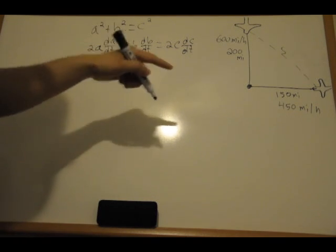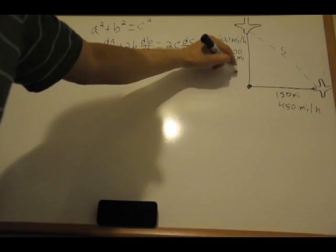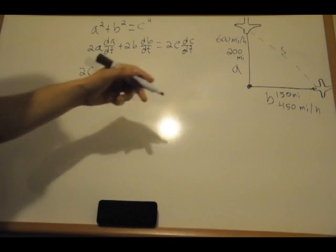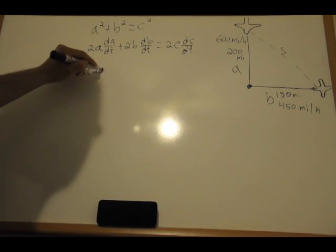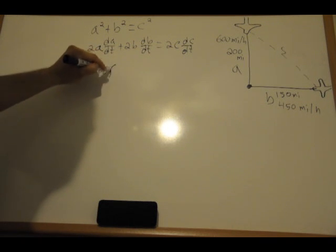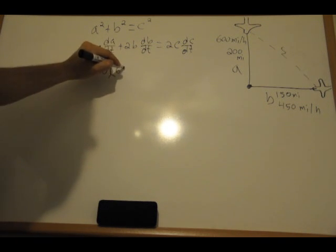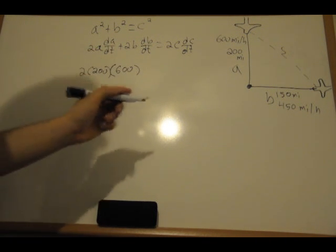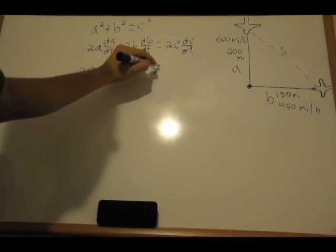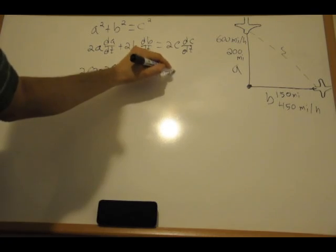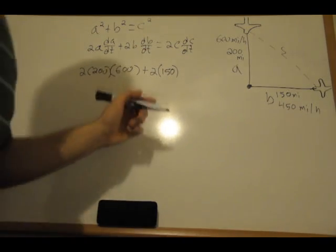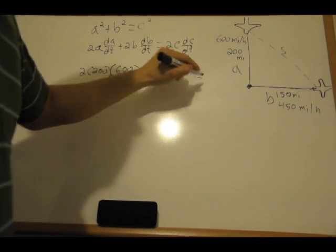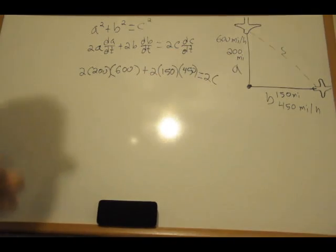This one is pretty easy. So it's going to be 2a - side a is equal to 200, da/dt is changing by 600 miles per hour. Now plus 2b, and b is 150 because that plane is 150 miles from the point, times db/dt is changing at 450 miles per hour, is equal to 2c. Now we have to find c.